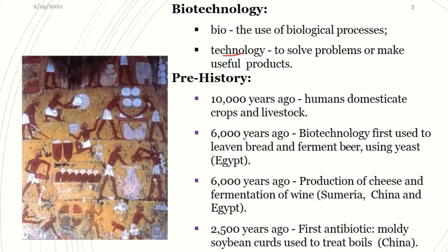We have had biotechnology from a very long time. For example, 10,000 years ago, humans were able to domesticate crops and livestock. And then we also have the leavening of bread and the fermenting of beer that was done in Egypt using yeast.